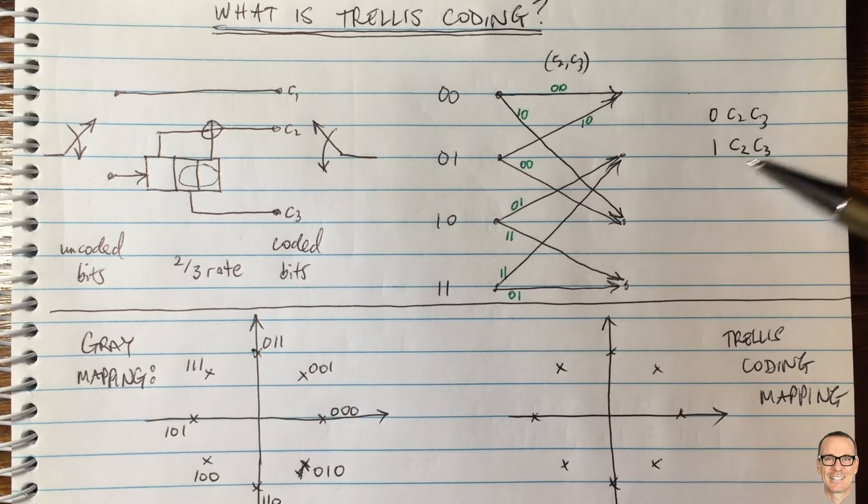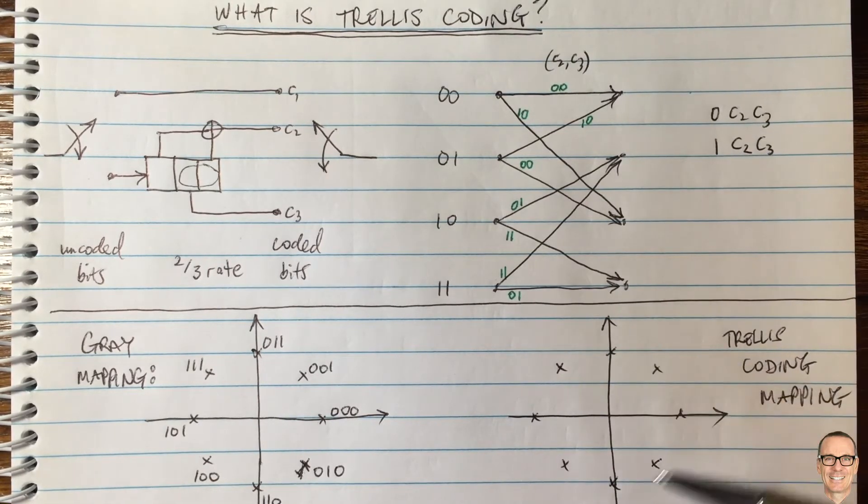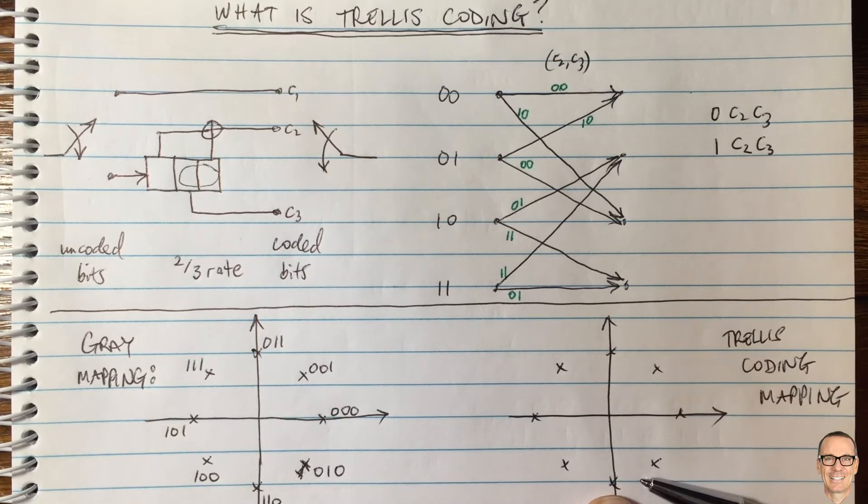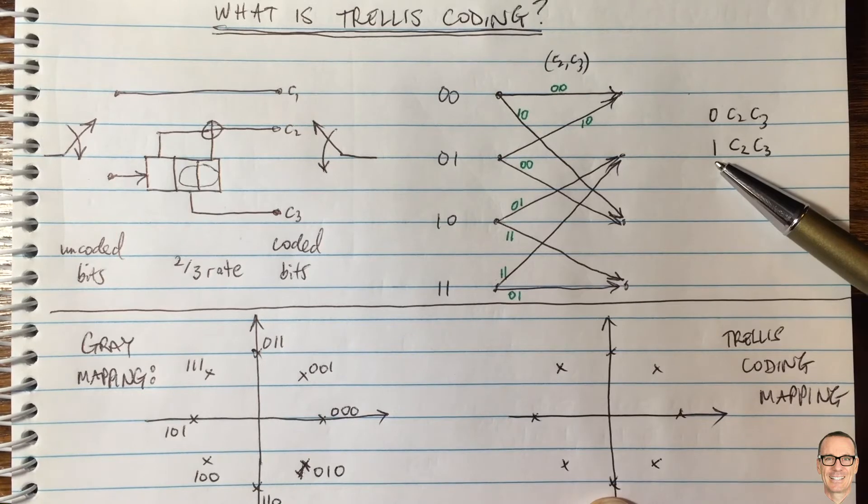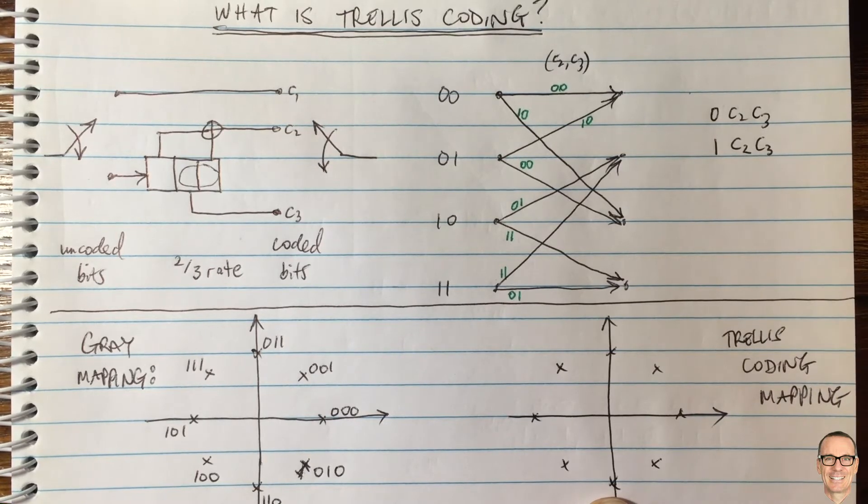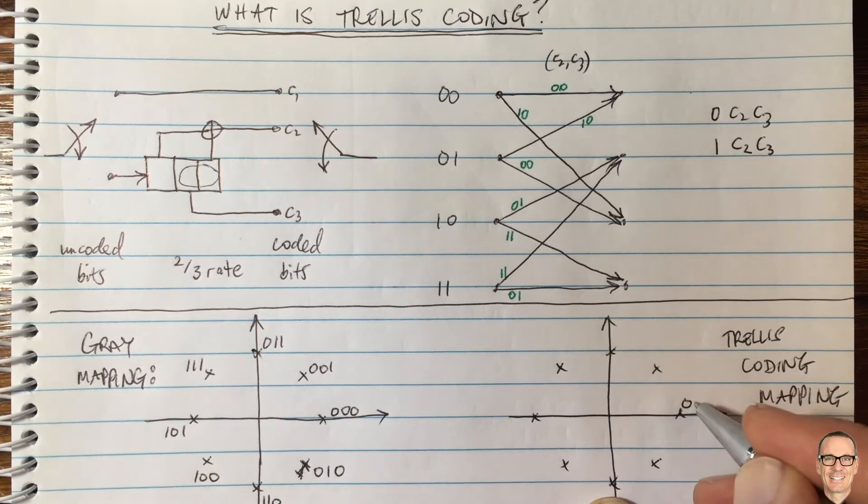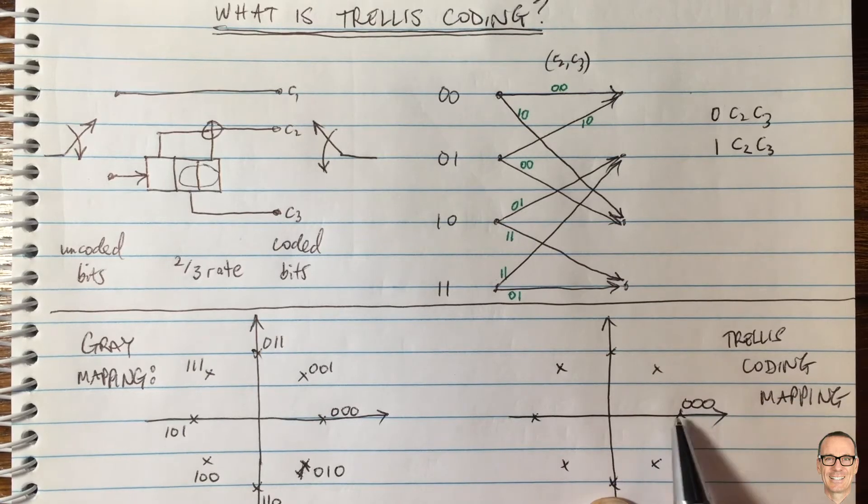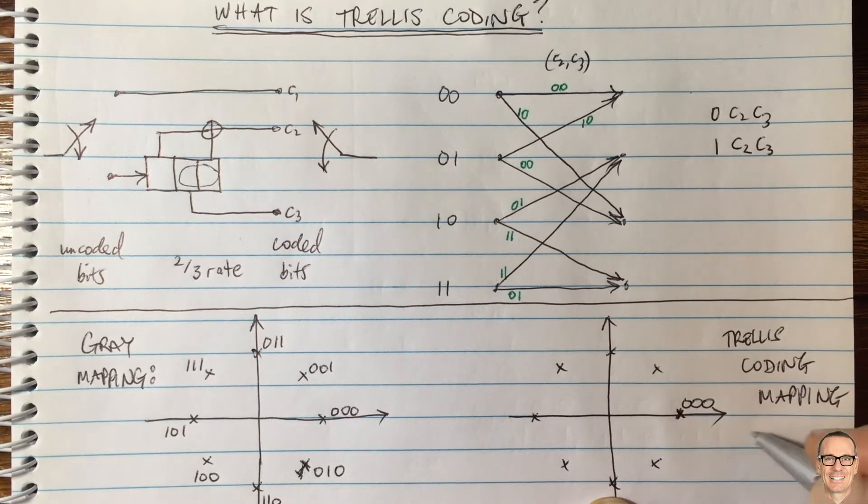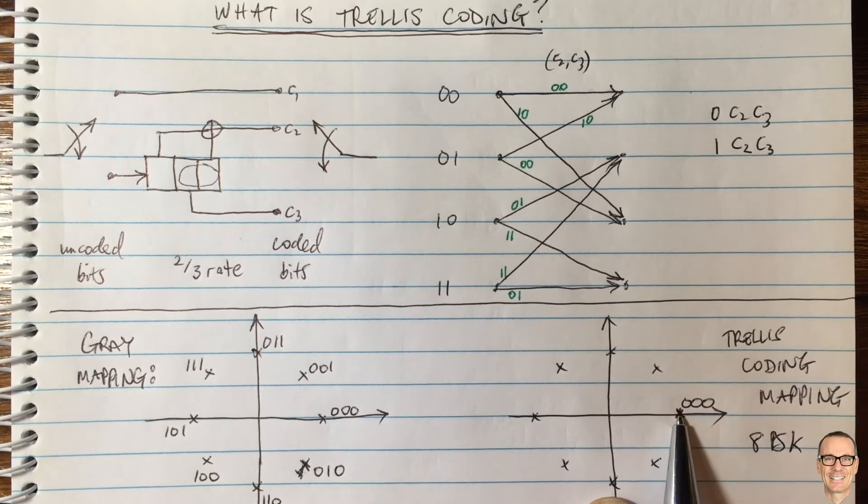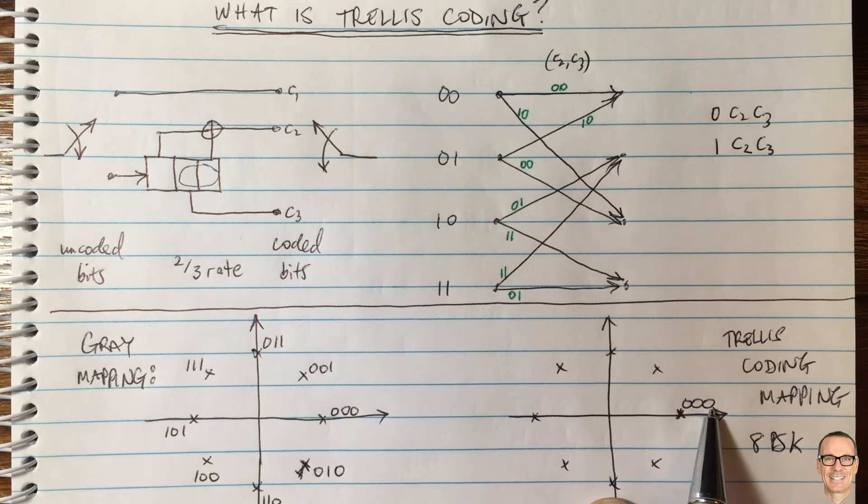So let's look at here. We said back here, we'd like in our mapping here onto the constellation points, we'd like 0 C2 C3 to be far away from 1 C2 C3. So let's give an example of that. So we would like to map 0 0 0 to this 8 PSK. So this is 8 PSK. So to that symbol, the sine wave with zero phase offset, we would map to 0 0 0.